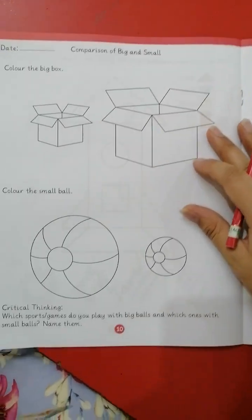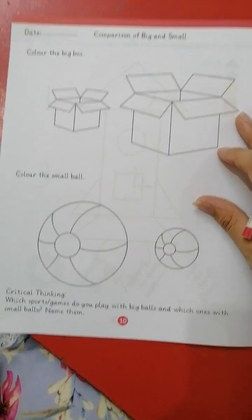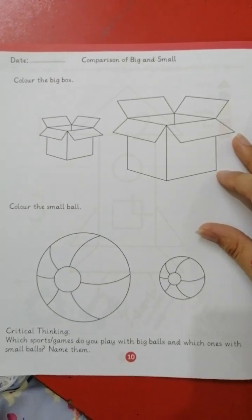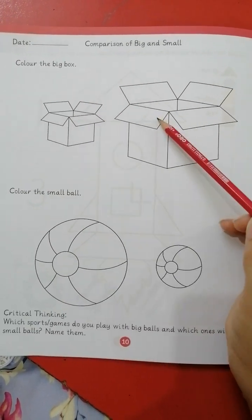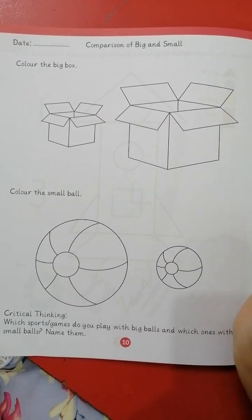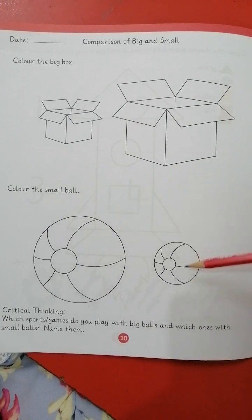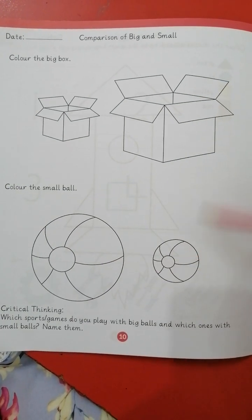Critical thinking. On next page we have comparison of big and small. Circle. Color the big box. Which one is big? You have to color it. Color the small ball. Which one is small? This one.